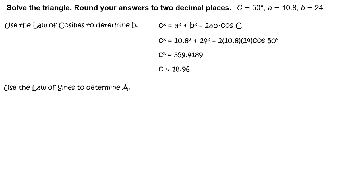Use the law of sines to determine the measure of angle A. Write: sine of the measure of angle A divided by the length of side a equals sine of the measure of angle C divided by the length of side c. Rewrite as sine of the measure of angle A equals the length of side a times sine of the measure of angle C divided by the length of side c.